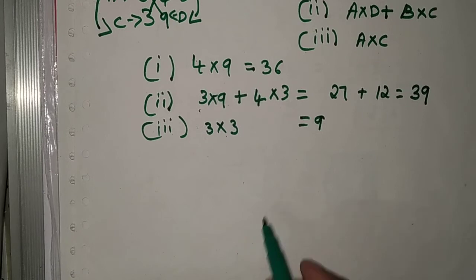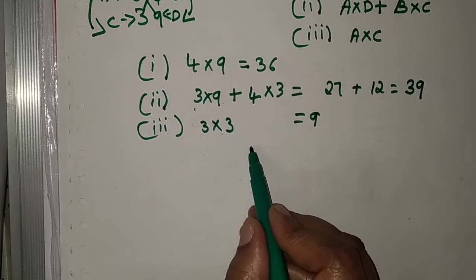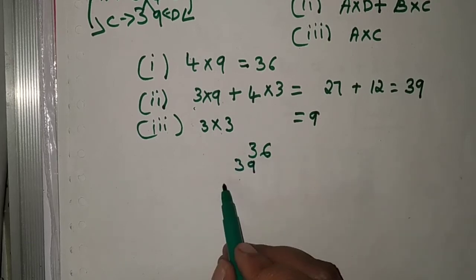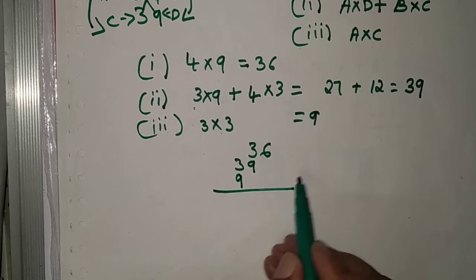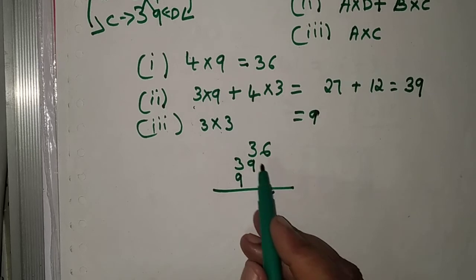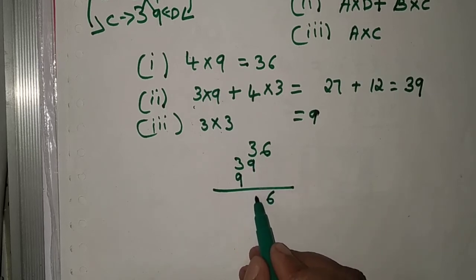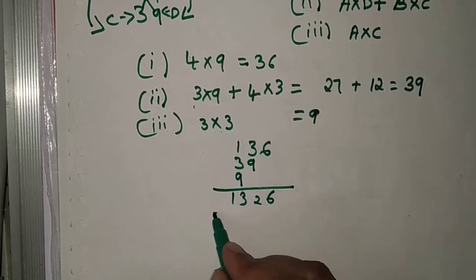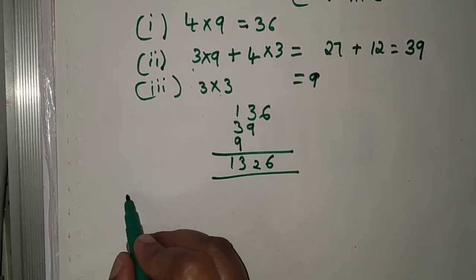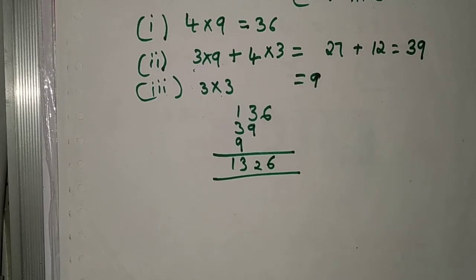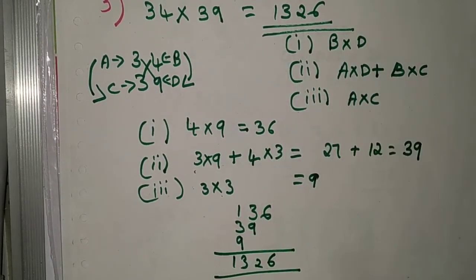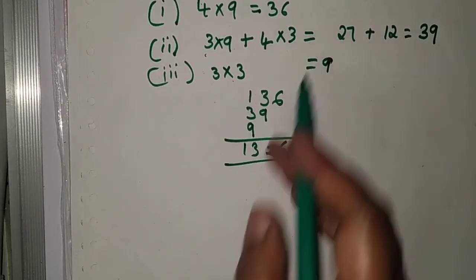Taking all the numbers — 36, then 39, then 9 — and adding in order: the units digit of 36 is 6, carry 3; 39 plus 3 is 42, units digit 2, carry 4; 9 plus carry gives 13. So we get 1, 3, 2, 6 — confirming 34 into 39 equals 1326.